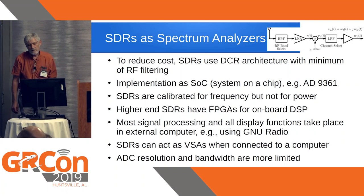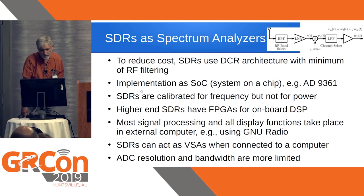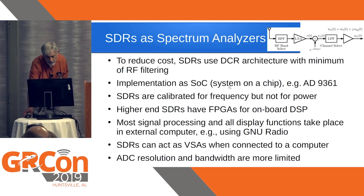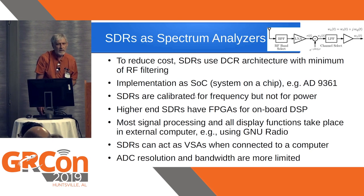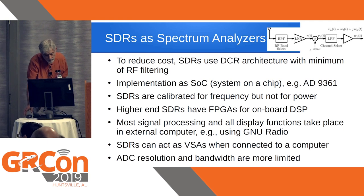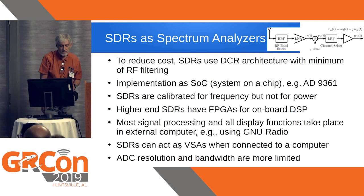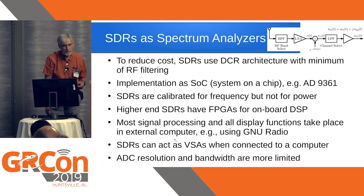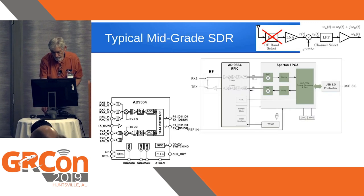To reduce cost, software-defined radios use the direct conversion receiver architecture with a minimum of RF filtering — in fact, the first band-pass filter is usually omitted on SDRs. They can be implemented as a system on a chip, like the analog devices chip seen in previous presentations. SDRs are calibrated for frequency but not for power — frequency calibration is relatively easy, but power calibration is much more time-consuming. Higher-end SDRs have FPGAs for onboard digital signal processing, and most signal processing and display functions take place in an external computer. SDRs can act as vector signal analyzers since they provide time-sequence output, but ADC resolution and bandwidth are typically more limited than those of professional spectrum analyzers.